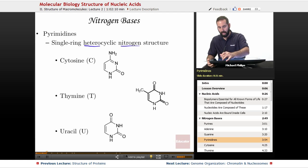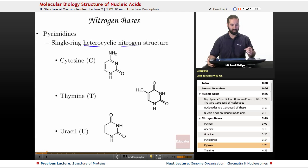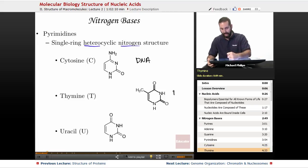So, we have cytosine, is one of our pyrimidines, and that is going to be found in DNA. We have thymine, another one of our pyrimidines, that is also going to be found in DNA.